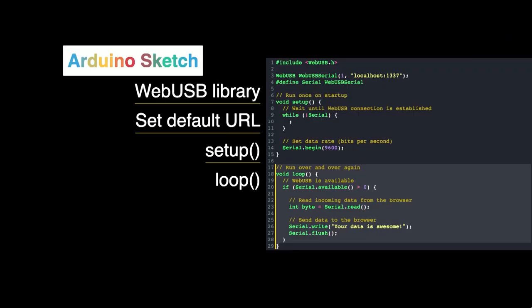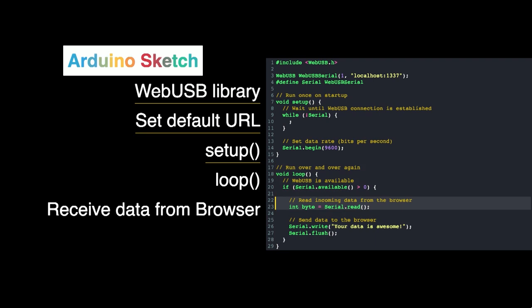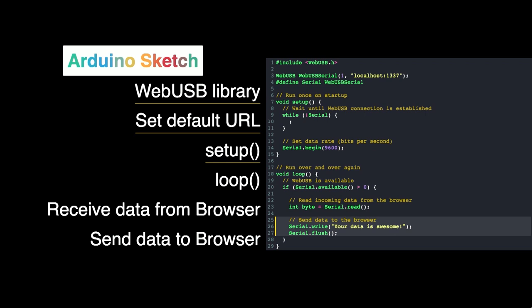And then we have a loop, which is called over and over again. The important bits are that we can receive data from the browser, and we can also send data back to the browser.